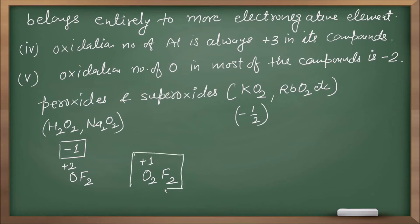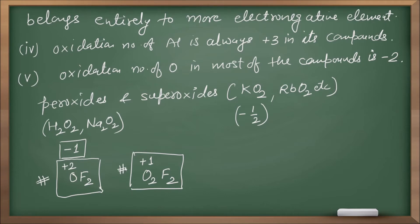These are the only exceptions. Otherwise, when assigning oxidation number to oxygen in any compound, assign minus two. Minus one is for peroxides, minus half for superoxides. Plus two and plus one are only for OF2 and O2F2 respectively. No other compound gives oxygen a positive oxidation number.